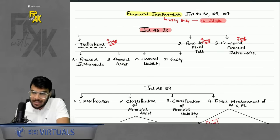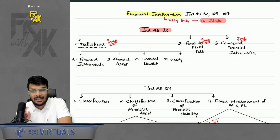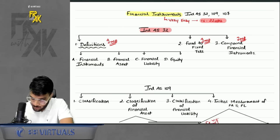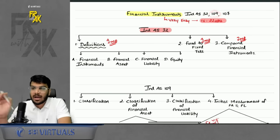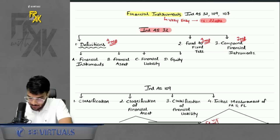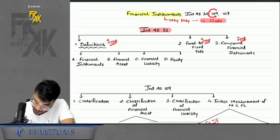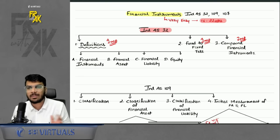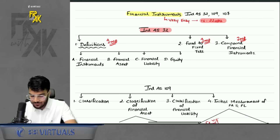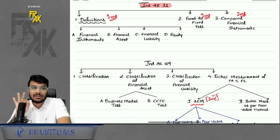First, let's discuss Financial Instruments. There are three indices: IND AS 32, IND AS 109, and IND AS 107. IND AS 32 covers definitions, IND AS 109 covers accounting, and IND AS 107 covers disclosures. The most important index is 109, but we will cover all three.